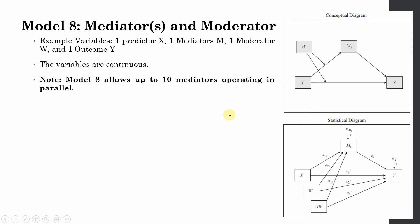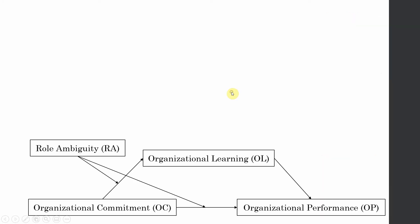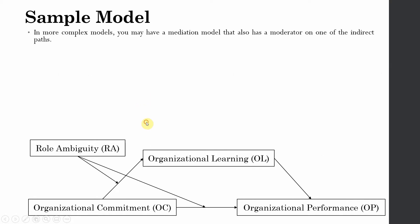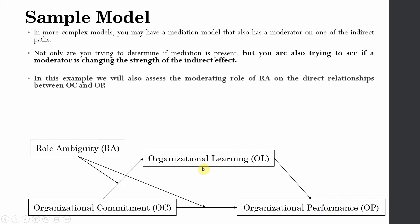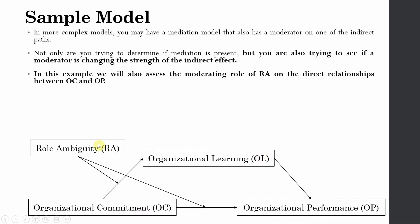In this case all the variables are continuous. Please note that Model 8 allows up to 10 mediators operating in parallel. The model we are going to test has OC as our independent variable, organizational performance as our dependent variable, organizational learning as our mediator, with the indirect effect being moderated by role ambiguity, which also moderates the direct relationship.